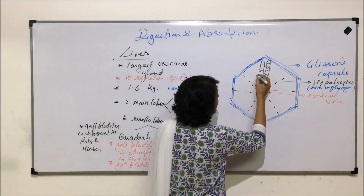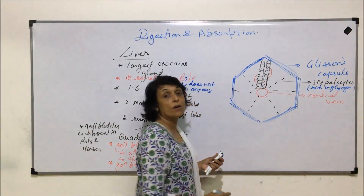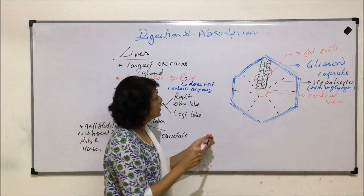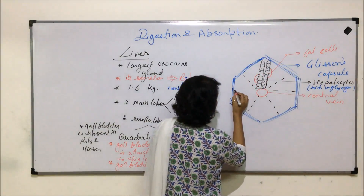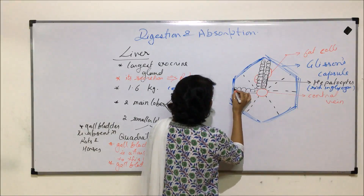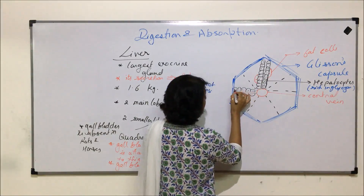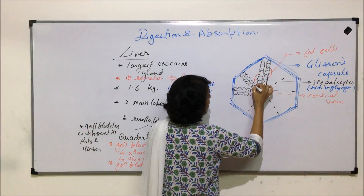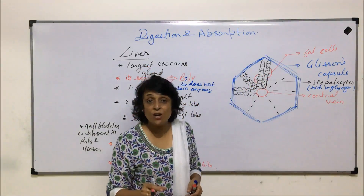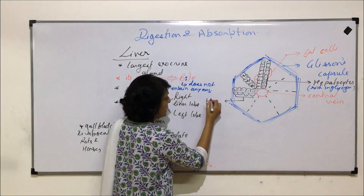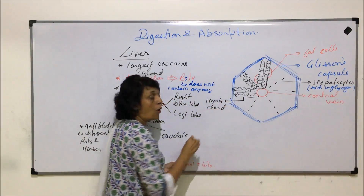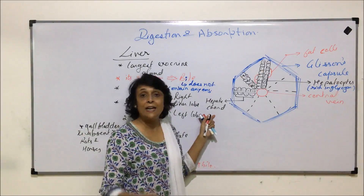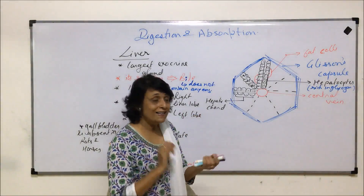Along with hepatocytes, there are also fat-storing cells associated with the liver plates. The hepatocytes are arranged in plate-like manner throughout. When we see a chain of hepatocytes, that chain is known as a hepatic cord — the word 'cord' is given to a chain of cells arranged in this manner.